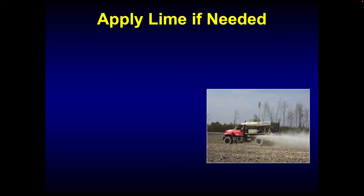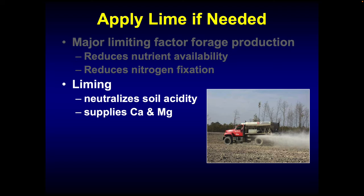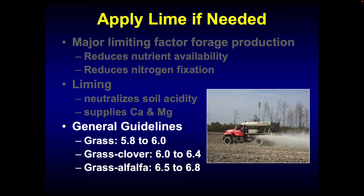If your soil test calls for lime, lime is one of the best investments you can make. If you need lime, it's going to give you the most bang for your buck because it makes everything else in the soil more plant-available. Low soil pH is still a major factor in limiting forage production — it reduces the availability of other nutrients and reduces nitrogen fixation in legumes like red clover, white clover, and alfalfa. Liming neutralizes soil acidity and supplies calcium and magnesium. For most pastures, we want to be between 6.0 and 6.4; for alfalfa, 6.5 to 6.8.